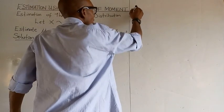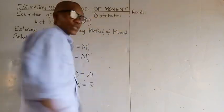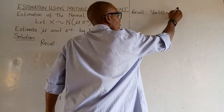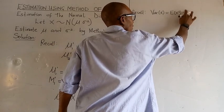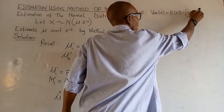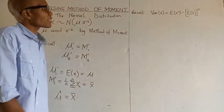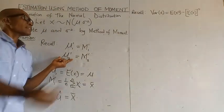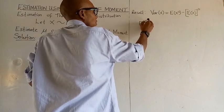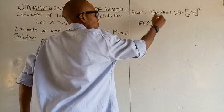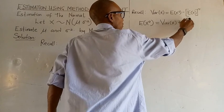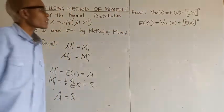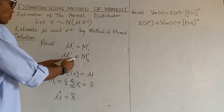We can also recall that the variance of X is equal to the expected value of X squared minus the expected value of X, all squared. So if we make the expected value of X squared the subject of the formula, we have it as our second population moment. That is, the expected value of X squared is equal to the variance of X plus the expected value of X, all squared.